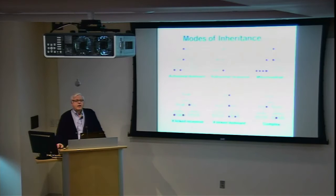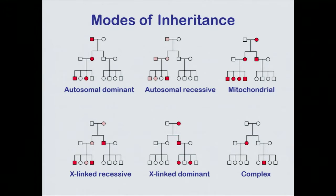Mendelian genetics simply means that you can follow the pattern of inheritance of the phenotype within a family and therefore predict the inheritance of the gene that causes that phenotype. Autosomal dominance is a case where even though you have two chromosomes of the same type, one from your mother and one from your father, it only takes one copy of the defective gene to cause the phenotype. Each child has a 50-50 chance of inheriting it. If the dominant is on the X chromosome, because males only have one X, you get X-linked dominant inheritance. If one intact copy is sufficient to prevent the phenotype, you see recessive inheritance — both copies have to be defective. With two carrier parents, one child in four will show the phenotype on average.